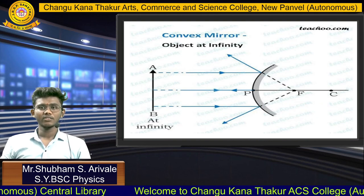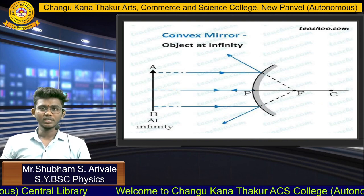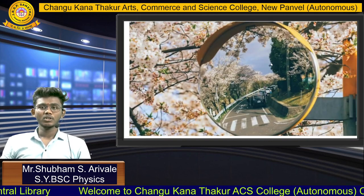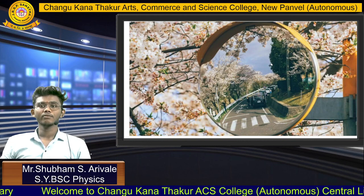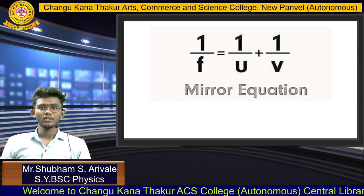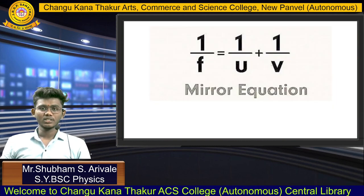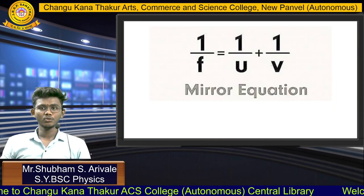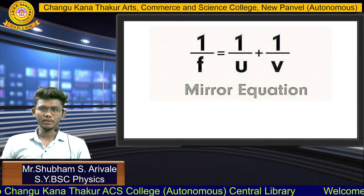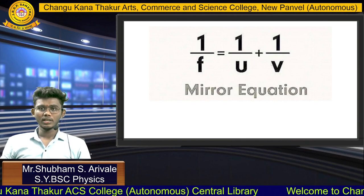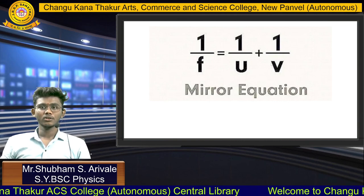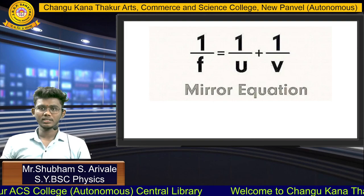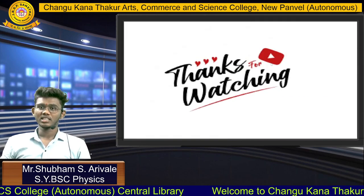Simple ray diagram for a Convex Mirror. Let's take one example of Convex Mirror — the Convex Mirror gives a wide view. Mirror Equation: 1/f = 1/u + 1/v, where f is the focal length, u is the object distance, and v is the image distance. Thanks for watching.